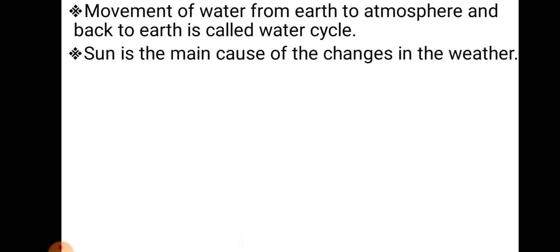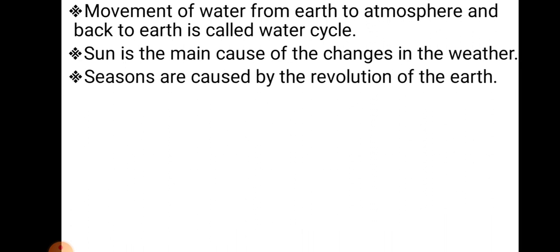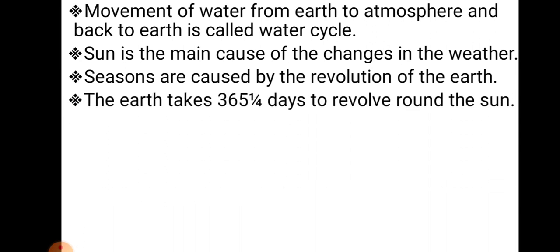Sun is the main cause of changes in the weather. Seasons are caused by the revolution of the earth. Revolution means when the earth is moving around the sun. The earth takes 365 and 1/4 days to revolve around the sun.